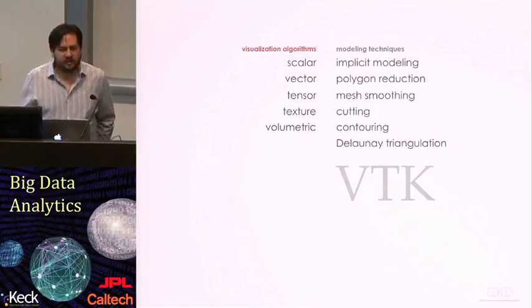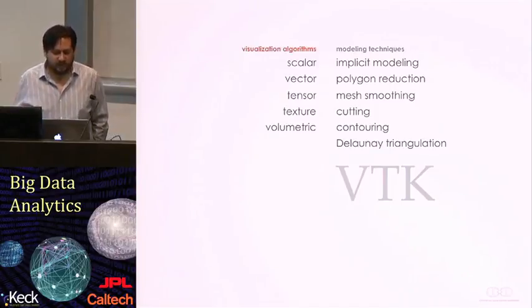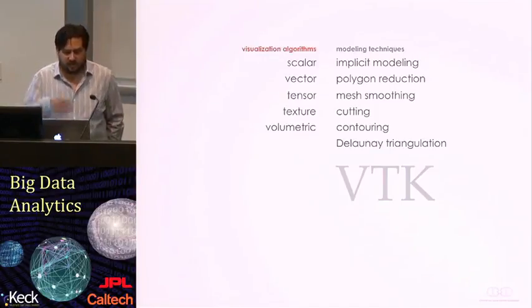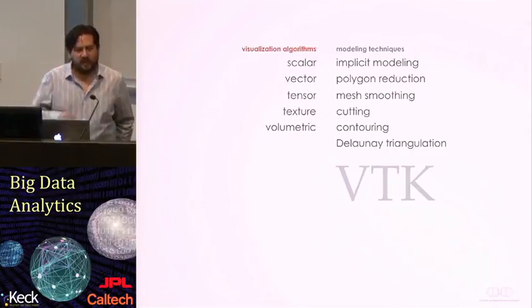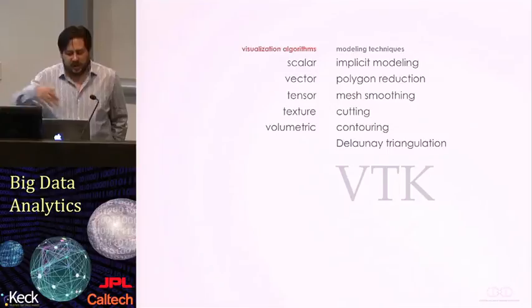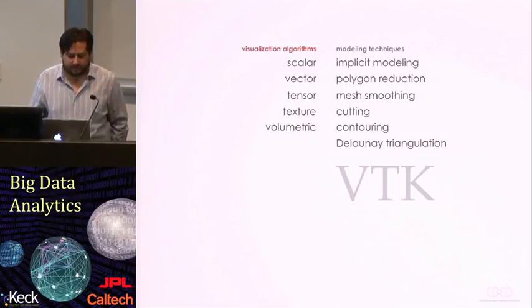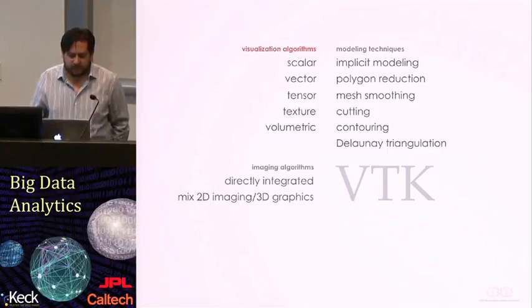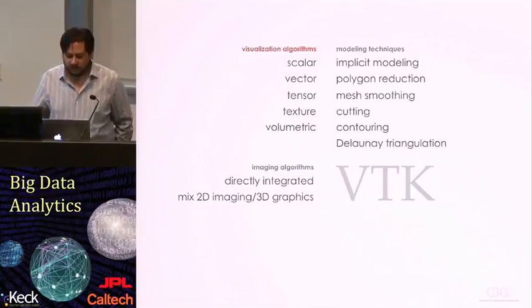You can actually create meshes themselves within VTK. There is implicit modeling, tools for polygon reduction, mesh smoothing. You can cut meshes to create new meshes that are just a subset of the original mesh. You can have a set of points in 3D space and come up with an envelope or a Delaunay triangulation of these points. There's also a set of imaging algorithms as well as some basic statistical tools and InfoVis tools within VTK.